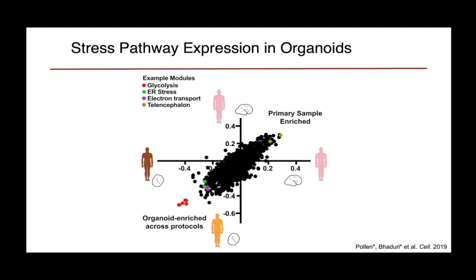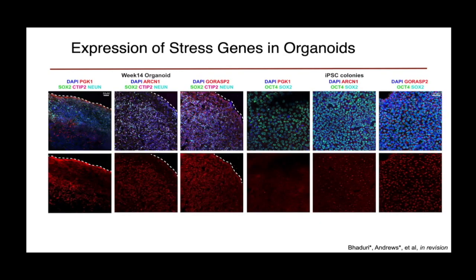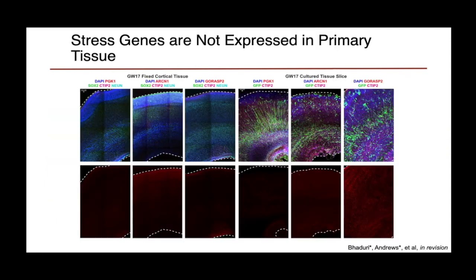Previous and current work showed that there are networks strongly enriched in the organoid across all protocols we observed, and these strongly correspond to glycolytic and endoplasmic reticulum stress. We validated that three genes were widely expressed in organoids: PGK1, a marker of glycolytic stress, and ARCHN1 and GORUSB2, markers of endoplasmic reticulum stress. These are broadly expressed in organoids but almost entirely absent in either primary fixed samples or those kept in culture for a week. We wanted to explore whether this indicated a significant difference in culture conditions driving the upregulation of stress.